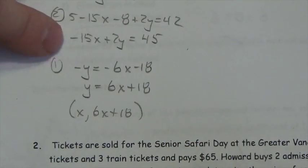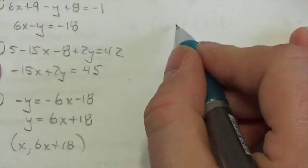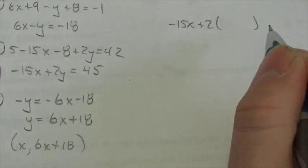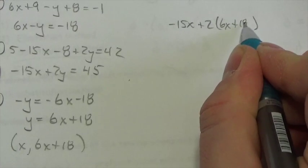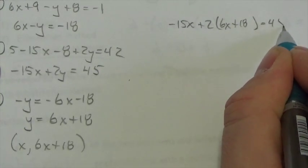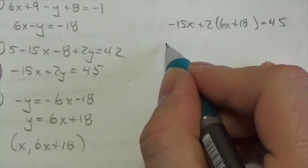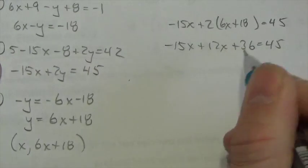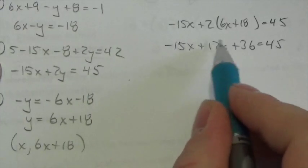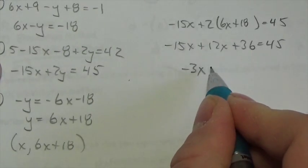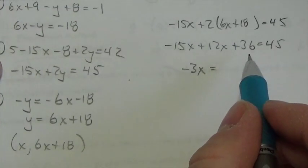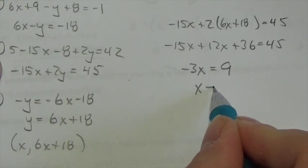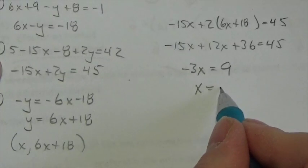I substitute that point into equation two. So that becomes negative 15x plus 2 times, in parentheses, 6x plus 18, equals 45. Distributing: negative 15x plus 12x plus 36 equals 45. Negative 15x plus 12x is negative 3x. Subtracting 36 from both sides: 45 minus 36 is 9. Dividing by negative 3: x equals negative 3.